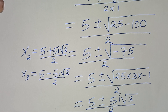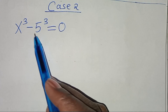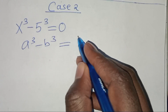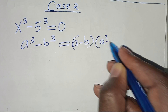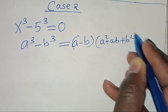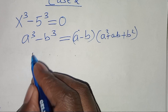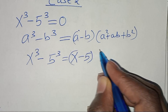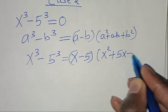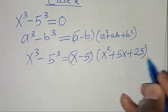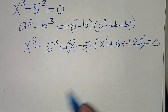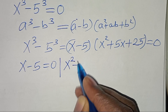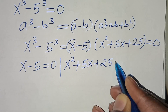Now for case 2, we have x to power 3 minus 5 to power 3 equals 0. This is the difference of two cubes, in the form a³ - b³, which equals (a - b)(a² + ab + b²). Applying this identity: x³ - 5³ = (x - 5)(x² + 5x + 25) equals 0. So we have x minus 5 equals 0, and x squared plus 5x plus 25 equals 0.